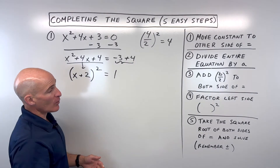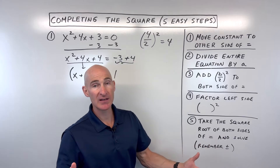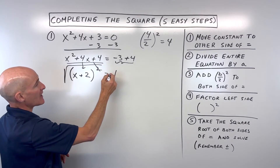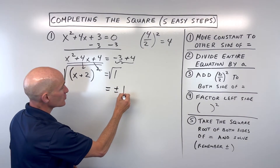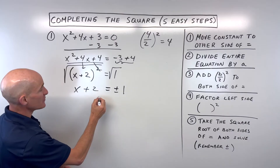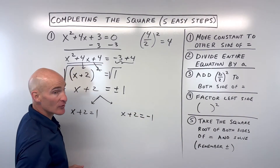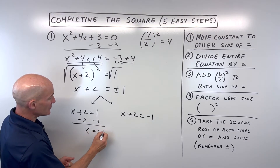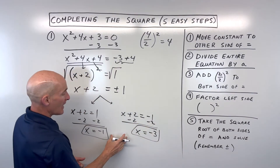Now we've completed the square, and we're going to solve by taking the square root of both sides of the equation. Remember when you do that, you get two answers — plus or minus. The square and the square root cancel each other. So we get x plus 2 equals plus or minus 1. You can split this into two equations: x plus 2 equals positive 1, and x plus 2 equals negative 1. Subtracting 2 from both sides gives x equals negative 1 and x equals negative 3. These are our two solutions.